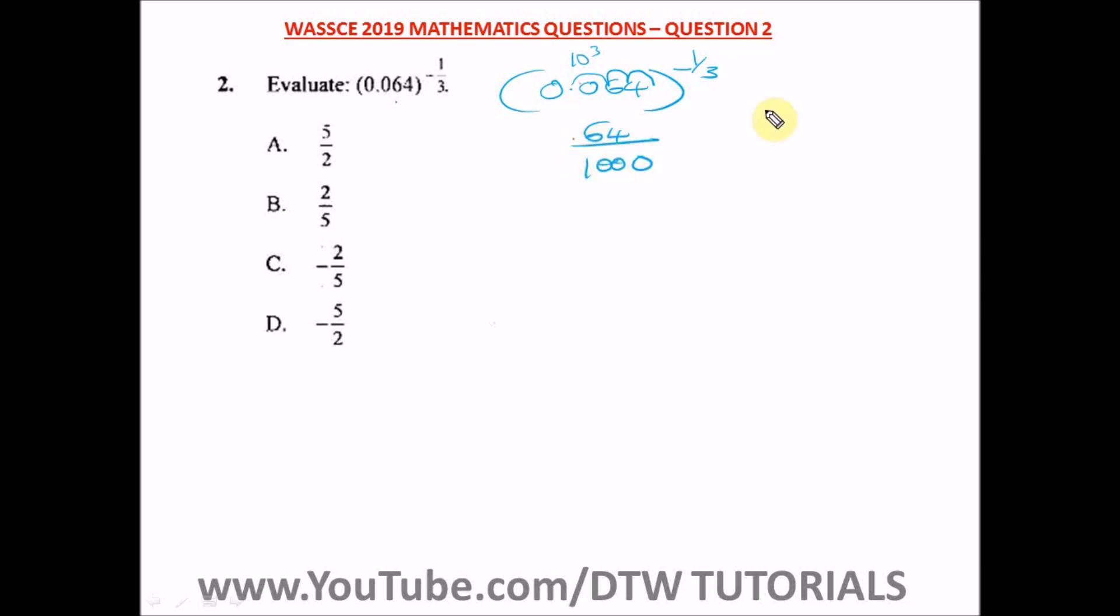This is indices, so we have to simplify it. Here, I will remind you, you have a negative power of 1 over 3. So from here, what do we do? We can just simply, first of all, let us invert, let us cancel this negative power. So we have here a 1 on number, 64 divided by 1000 raised to power 1 over 3.